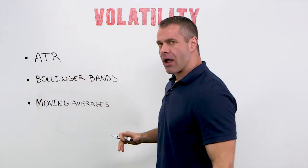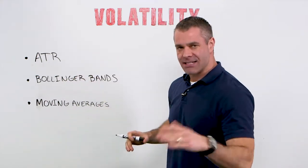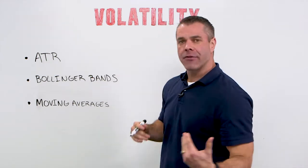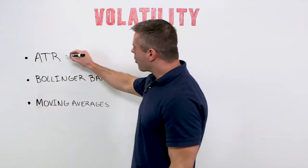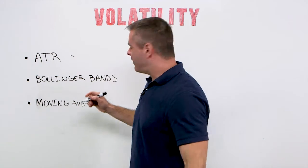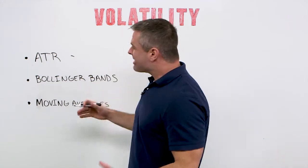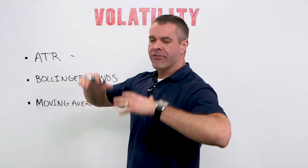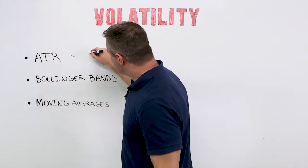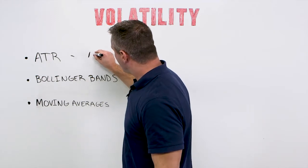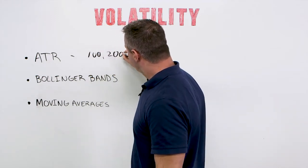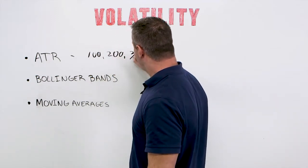Let's start with ATR. ATR stands for Average True Range. I'm going to give you a real easy, simple example of this. Let's say over the last three periods, the prices are 100, 200, and 300.